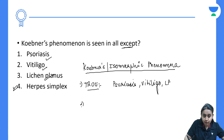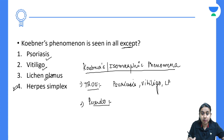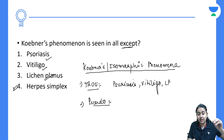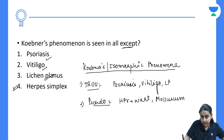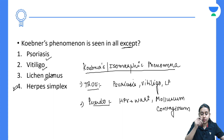The second type is pseudo or false Koebner's Phenomenon. It occurs because of auto-inoculation — there is no true pathomechanism; it is simply infection or inoculation of the organism. This is seen in diseases like human papillomavirus infection and molluscum contagiosum. So we have true Koebner's and pseudo Koebner's Phenomenon.